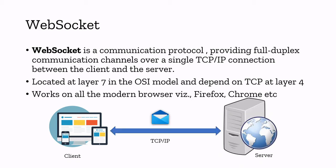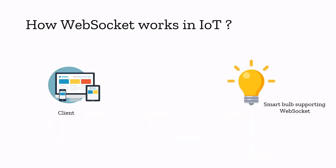There is a bi-directional communication between the client and server using a single TCP/IP connection in order to send and receive messages. Now let's see how WebSocket works in Internet of Things. I have a client — it can be your smartphone or browser — and I have a smart bulb supporting WebSocket. How WebSocket works is the client will always do a handshake with the server first. It's going to use an HTTP GET request mentioning: upgrade my connection to WebSocket.